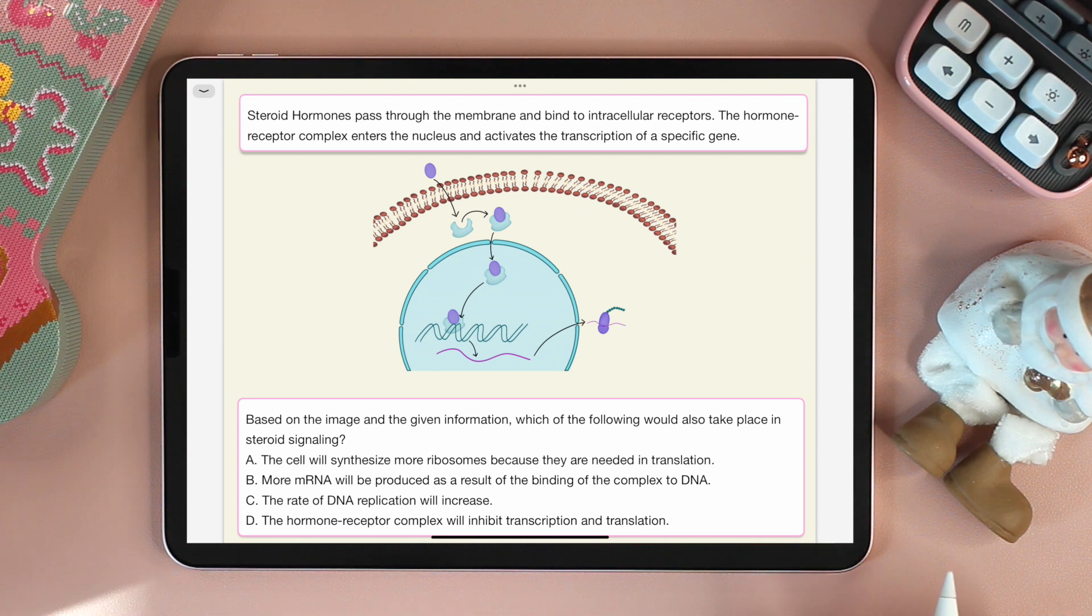I'm sure by now you all figured out that choice B is the answer. More mRNA will be produced as a result of the binding of the complex to DNA. None of the other choices make sense.